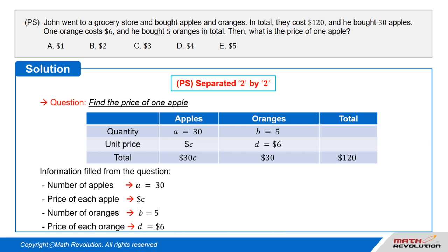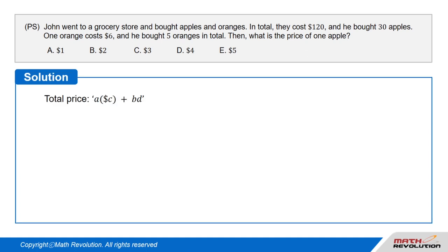Number of oranges equal to B, which equals 5. Price of each orange equal to D, which equals $6. Now, total price equal to A times C plus B times D, which equals $120.